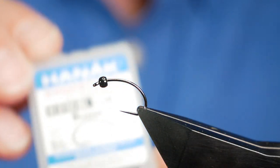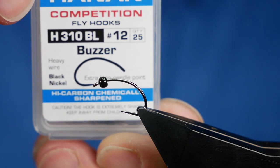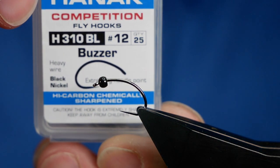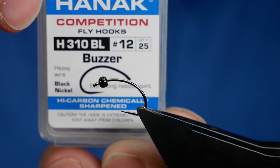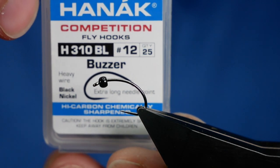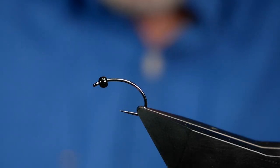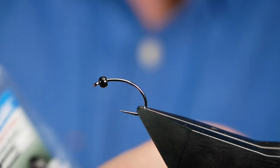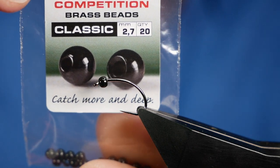In the vice then is a Hanak H310 barbless hook, this one's at size 12. It's on a heavy wire and it's in black nickel, and I've coupled that with a 2.7 Hanak Competition tungsten bead.